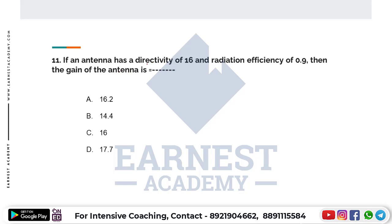If an antenna has a directivity of 16 and radiation efficiency of 0.9, then what is the gain of the antenna? The directivity, denoted by D, is 16. Directivity is a dimensionless quantity equal to 4π divided by omega-A, where omega-A is the beam area.